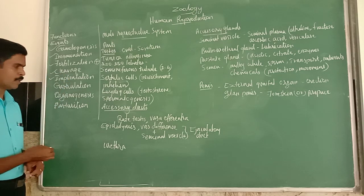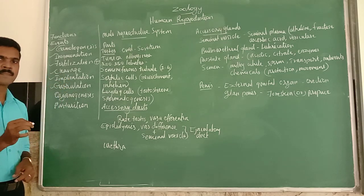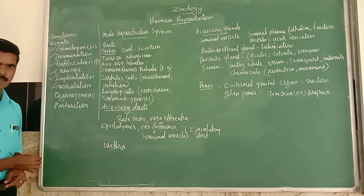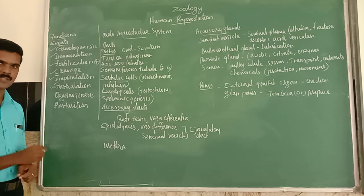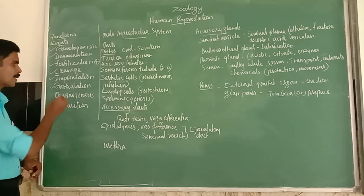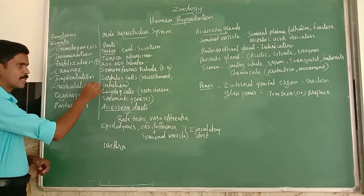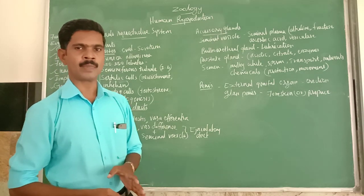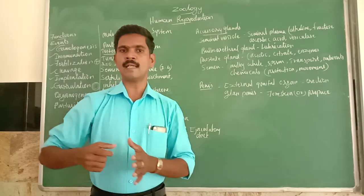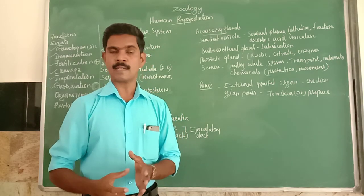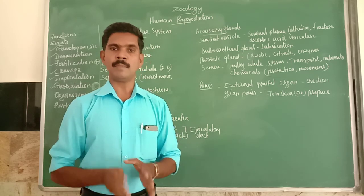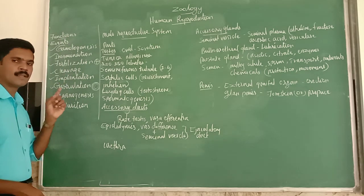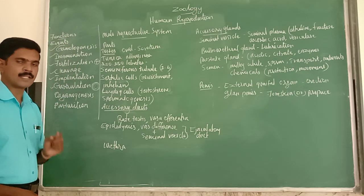The next event is gastrulation — the process of conversion of the blastocyst into a gastrula. Inside the gastrula, three germ layers are formed: ectoderm, endoderm, and mesoderm. When the zygote is converted into the gastrula, all three germ layers are formed inside it. This process is called gastrulation.